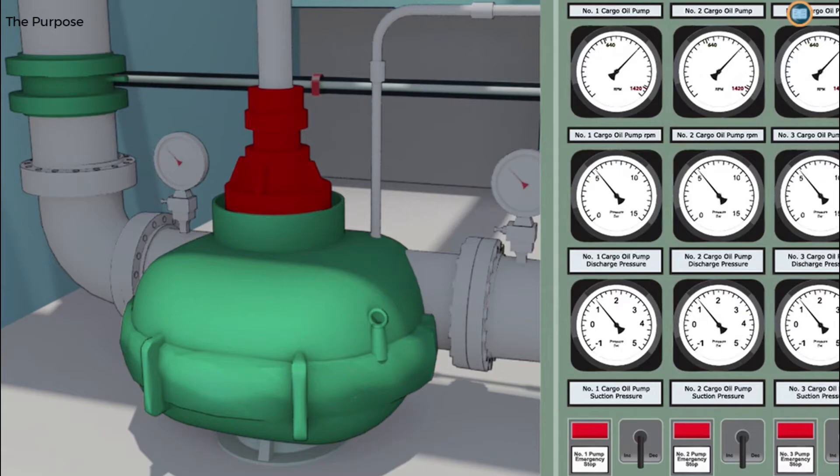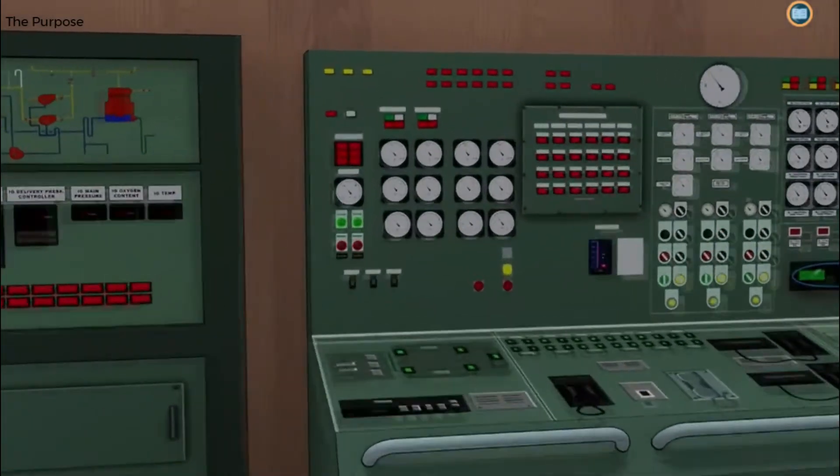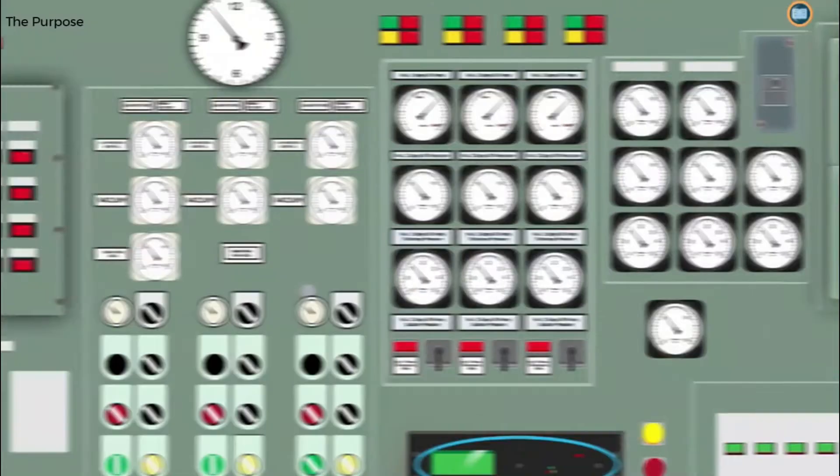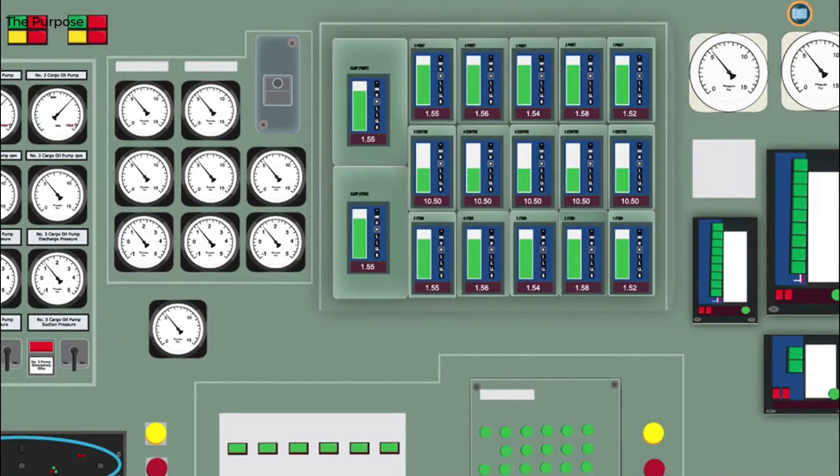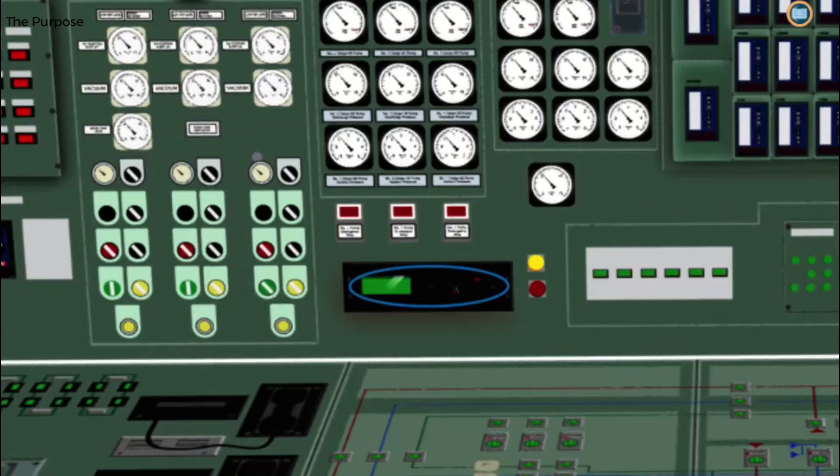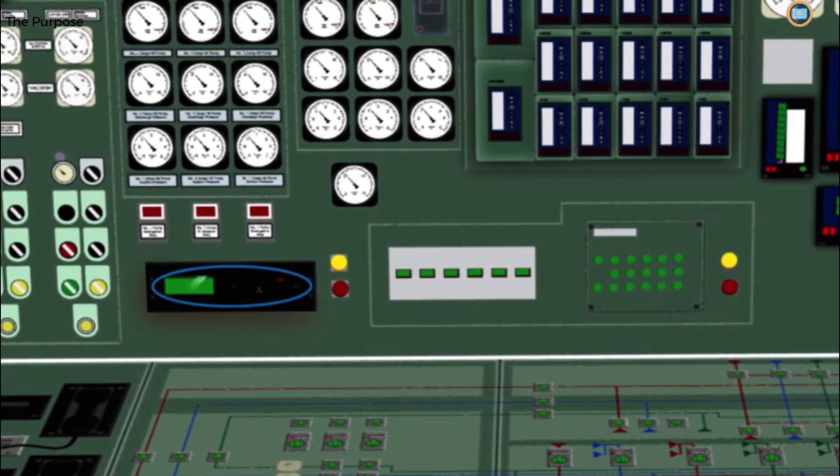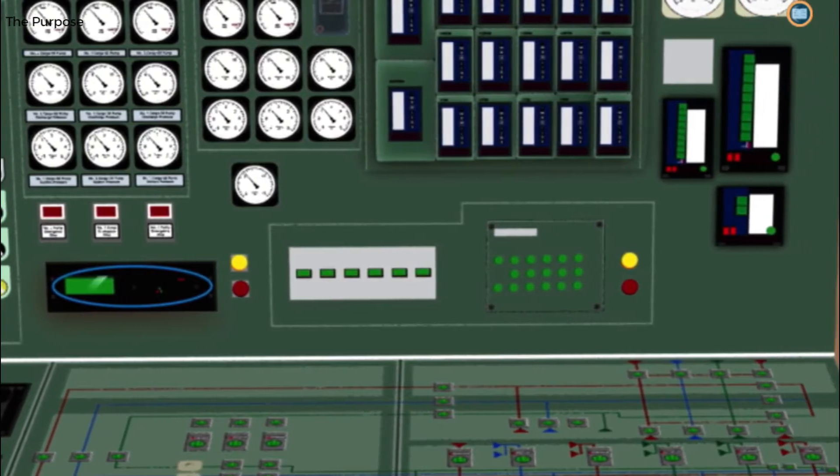We'll also focus on how to operate centrifugal cargo pumps effectively and how to operate pumps as cargo tanks approach stripping levels. Throughout, we'll use this pump control console to show what you need to monitor and control during the discharge operation. We'll also consider some of the practical aspects of controlling flow rates so that you can play your part in a safer, more efficient discharge operation.